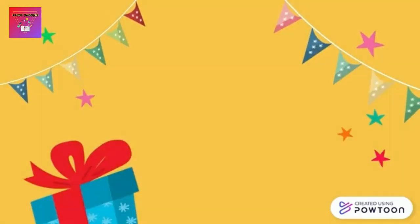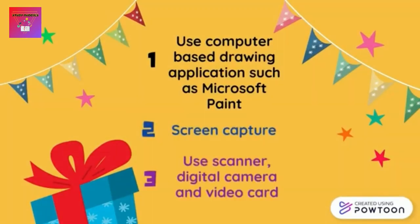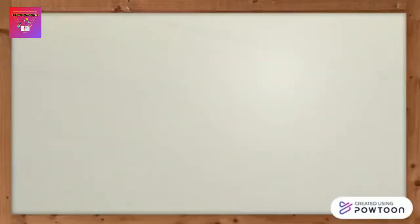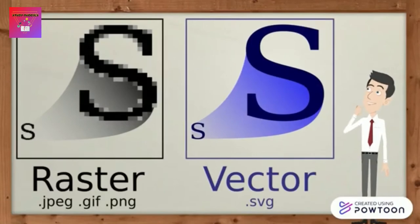There are three main methods to produce a bitmap image: firstly, use a computer-based drawing application such as Microsoft Paint; secondly, screen capture; and thirdly, use a scanner, digital camera, or video card. This picture shows the difference between a raster image and a vector image.